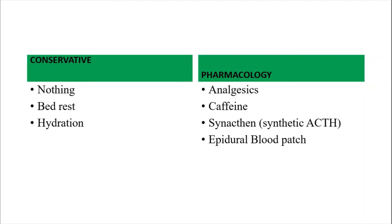Pharmacological management is considered when headache persists after conservative management. First, analgesia: give non-steroidal anti-inflammatory drugs like paracetamol if not contraindicated — this may be enough in mild cases of post-dural puncture headache. Second, caffeine: since PDPH results from dilation of intracranial veins, caffeine as a cerebral vasoconstrictor can be effective, especially when simple analgesics have failed.